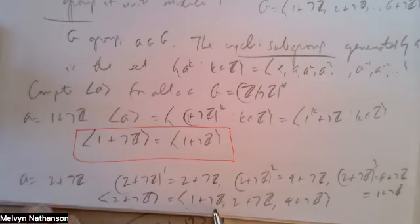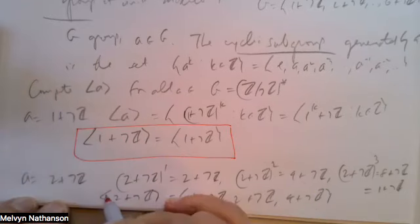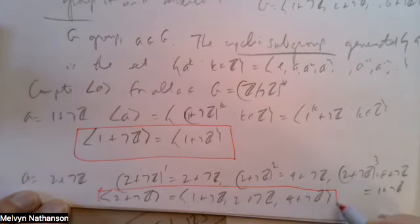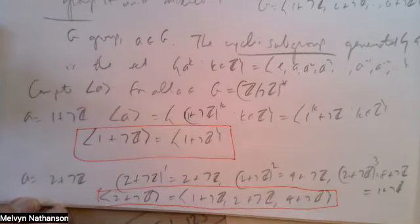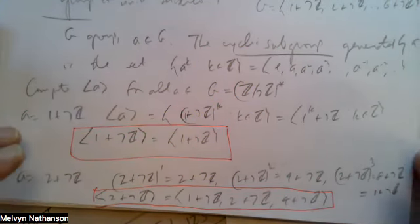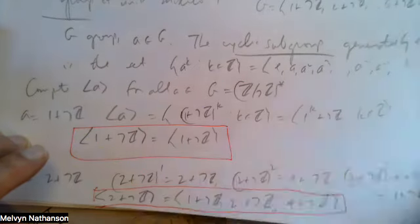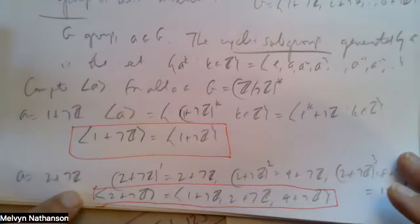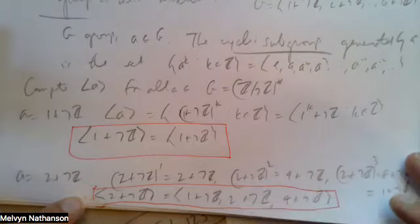This is a cyclic subgroup — all powers of this element. So this is a second cyclic subgroup contained in the group. You have to understand what a group, subgroup, and cyclic subgroup are: a cyclic subgroup is all powers of a fixed element. What about 3+7Z?